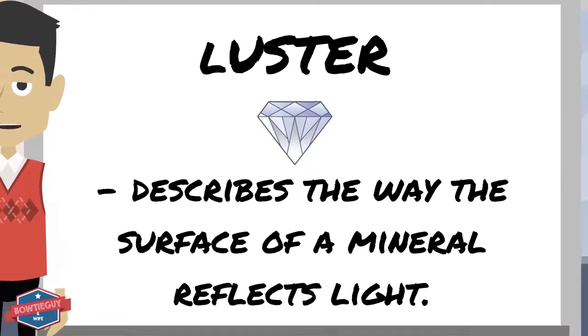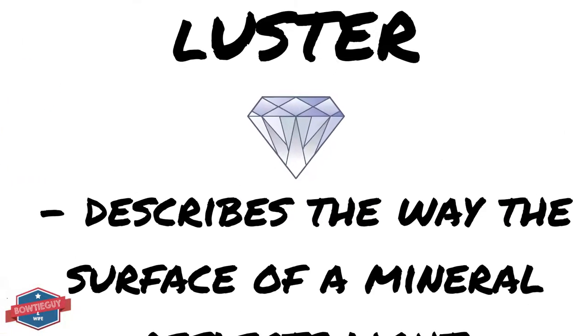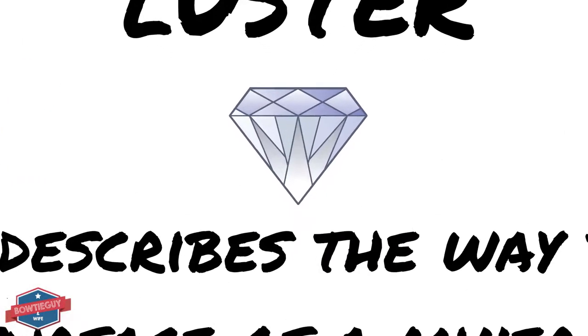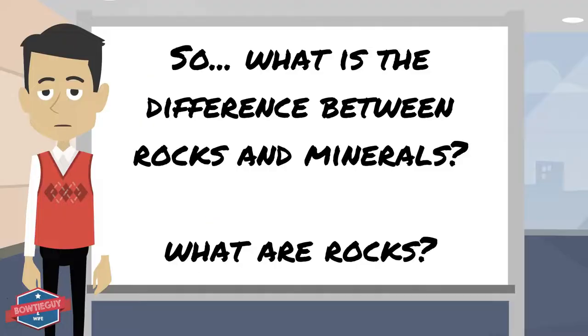A mineral's luster describes the way the surface of a mineral reflects light. A diamond is very shiny, so it definitely has luster. So I think we're developing an understanding of minerals.